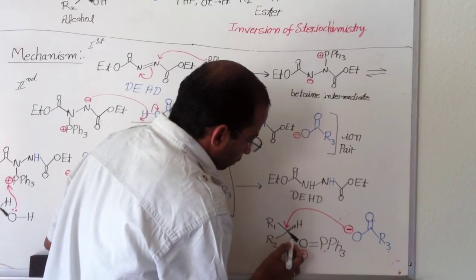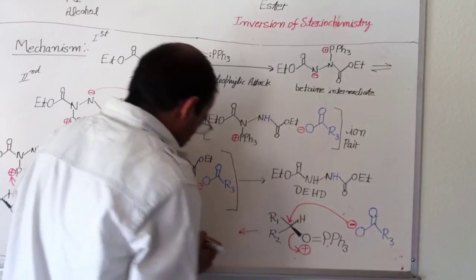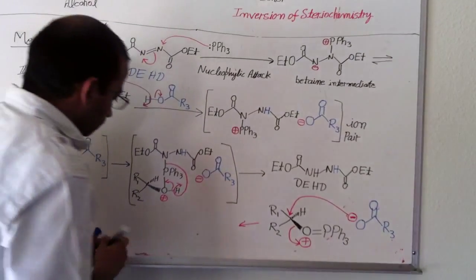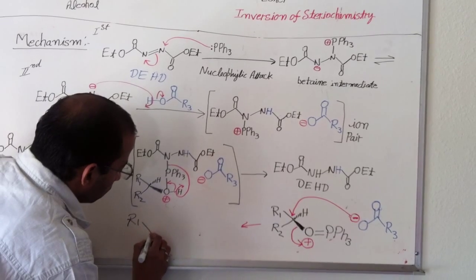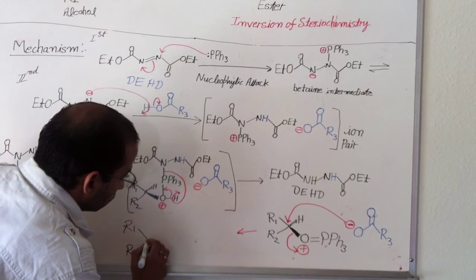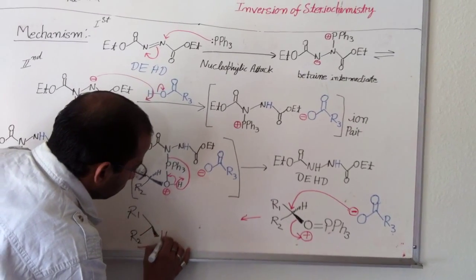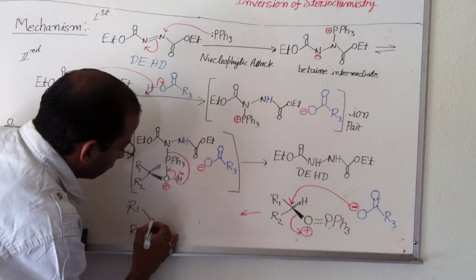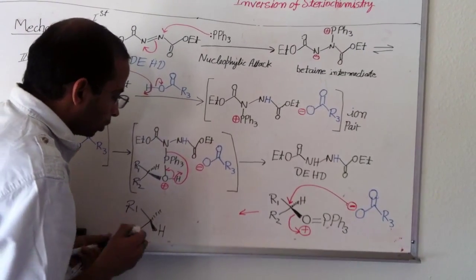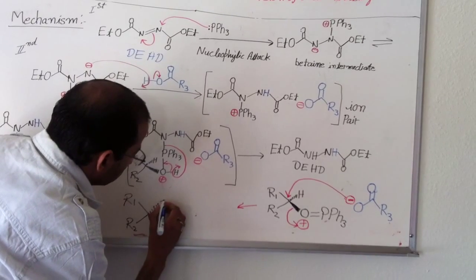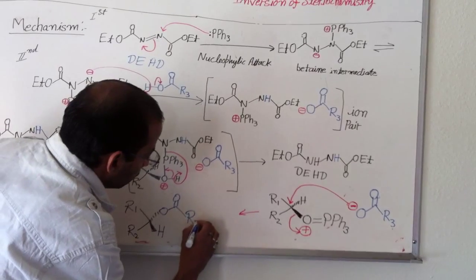And then, this electron goes to phosphine. And at the end, you will see the product is R1, R2. And then, this hydrogen actually comes up above the plane. And then, this carboxylate comes from the back side and makes an ester, R3.